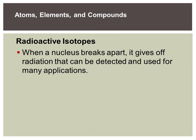Radioactive isotopes — carbon-14, uranium, plutonium — you've all seen Marvel and DC comics where radioactive stuff gives people superpowers, or think of Chernobyl and the tsunami in Japan. Radioactive isotopes give off radiation when that nucleus starts to break apart — basically the protons are leaving. That radiation can be detected and used for many applications: cancer treatment, powering and energy, aging fossils, et cetera.